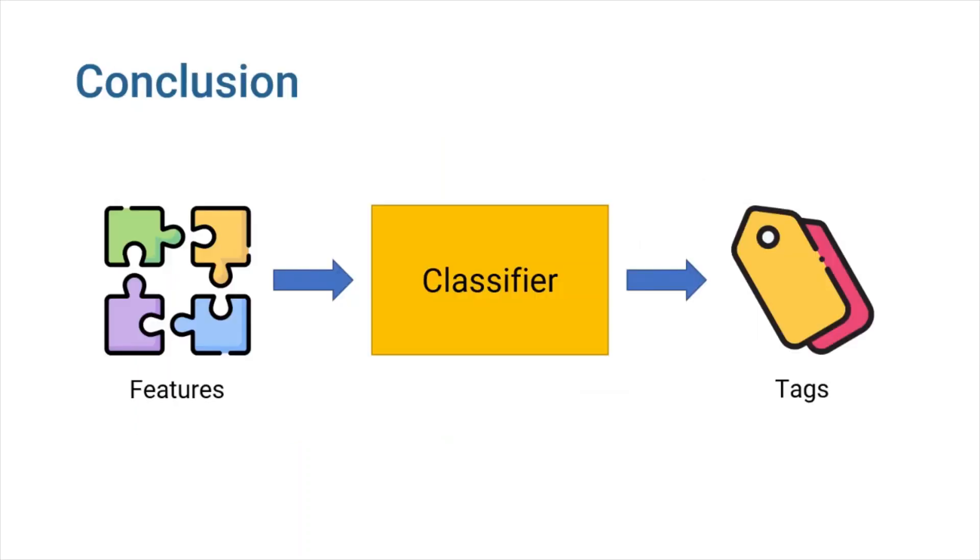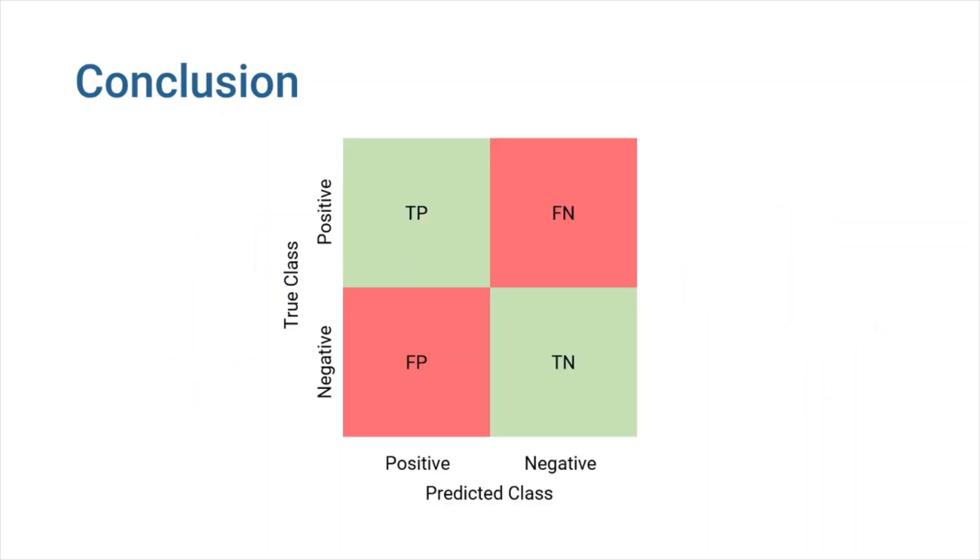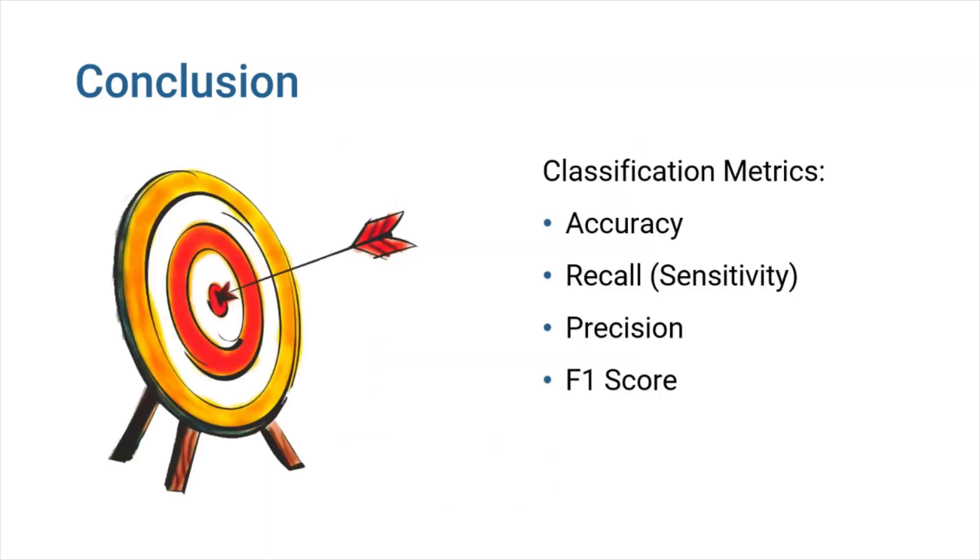In this video, we first revisited the concept of classifiers. Then we talked about confusion matrices, a clever way for figuring out how well our model is working. Finally, using our example of superhero detector, we became familiar with classification metrics such as accuracy, recall, precision, and F1 score.